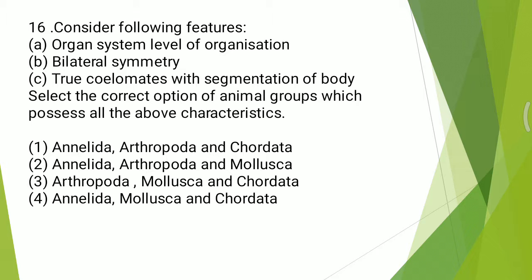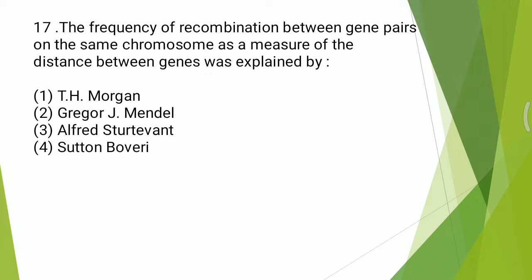Sixteenth question: consider the following features — organ system level of organization, bilateral symmetry, true coelomate with segmentation of body. Which animal group possesses all of the above characteristics? The correct answer is the first option — Annelida, Arthropoda, and Chordata.